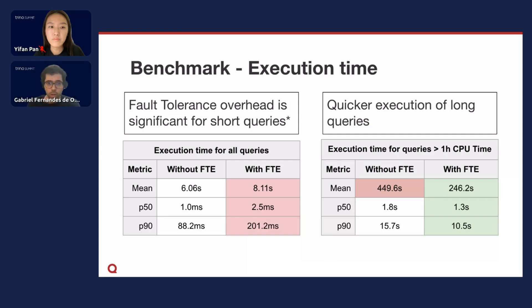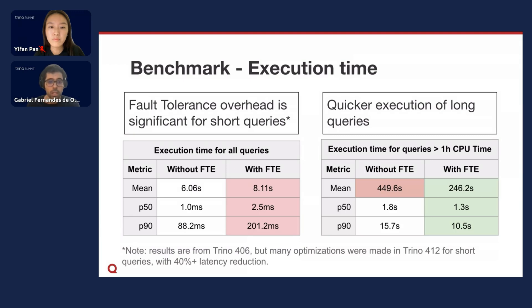I do want to note that these results were calculated using Trino 3.04.06. Since then, there have been many optimizations for fault tolerance mode. Specifically in 3.04.12, there were optimizations for short queries which improved latency by more than 40%, so these results may not be as accurate right now.